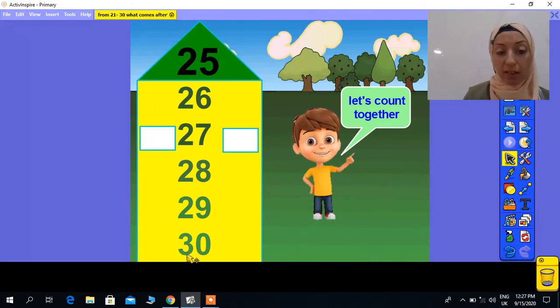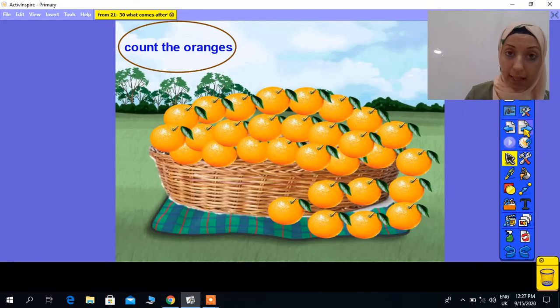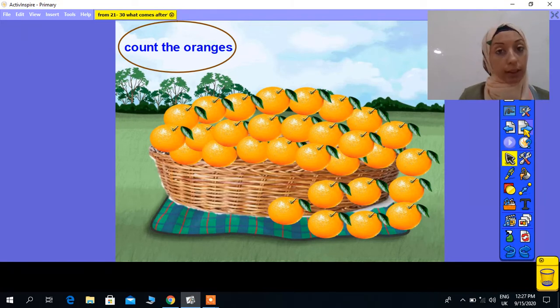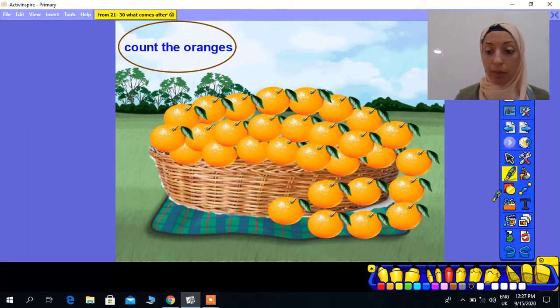So 3 and 0 beside each other like that will give me number 30. Count again: 25, 26, 27, 28, 29, and 30. So now we can count from 1 to 30. I'll ask you how many oranges do we have here. Let's count together.